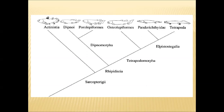Actinopterygii is also called ray-finned fishes. We have seen the origin and salient features of Actinopterygii in the last class. Coming to Sarcopterygii — under the Sarcopterygii group, now we are having only a few groups left.